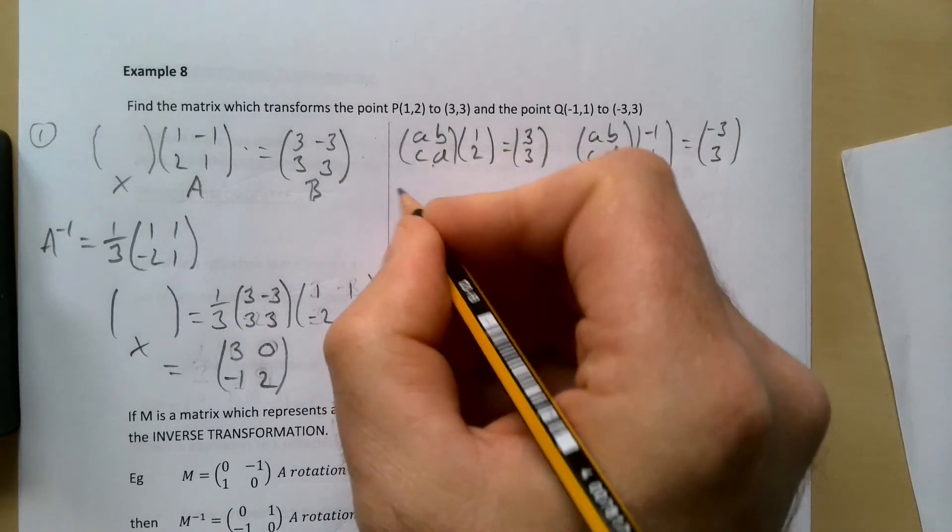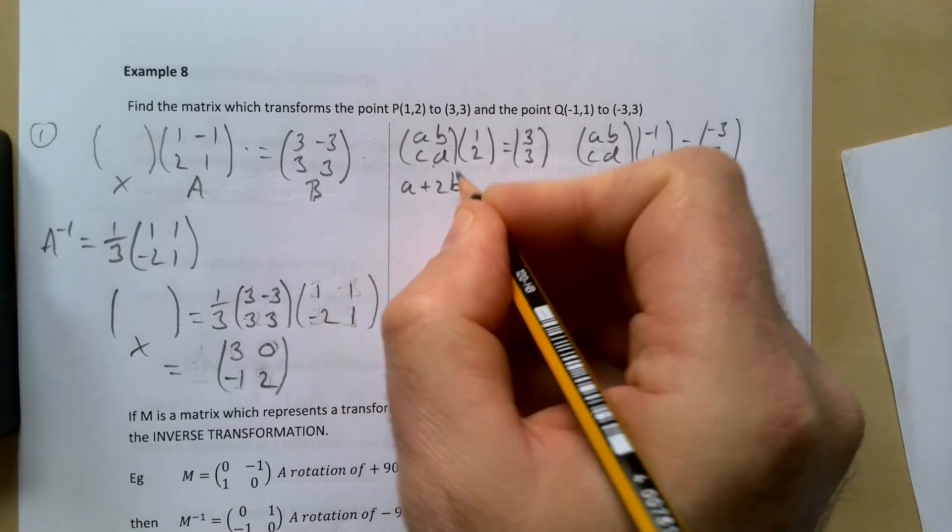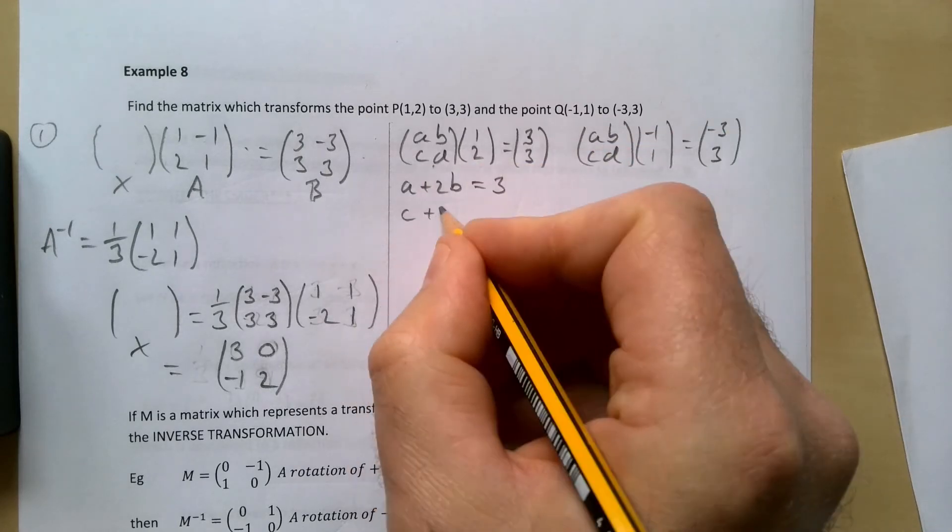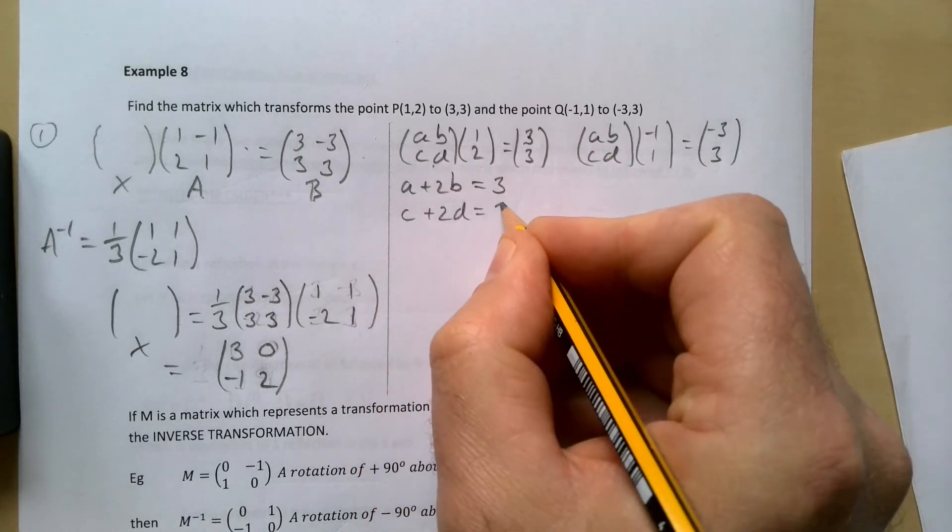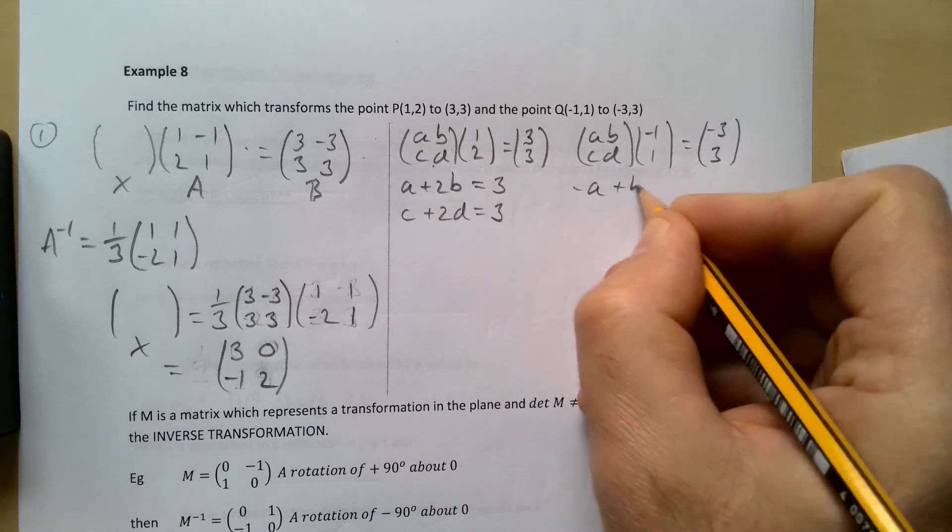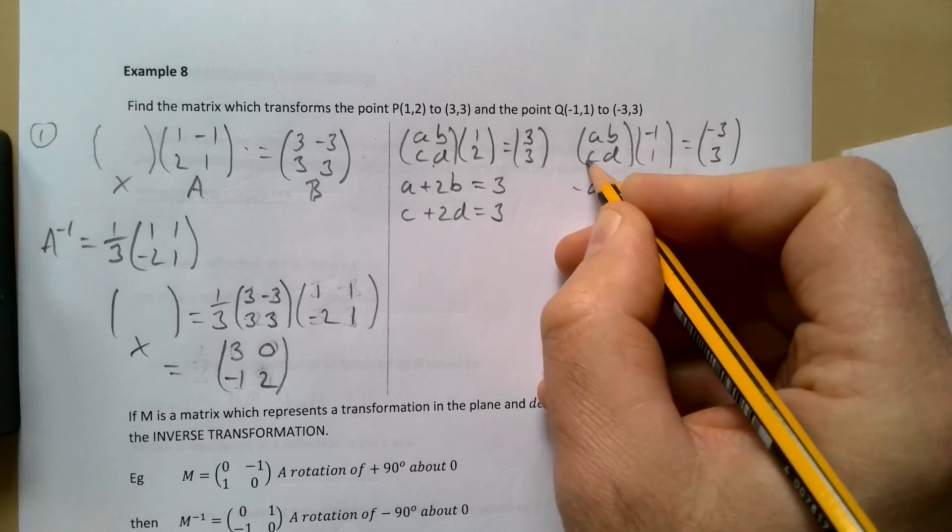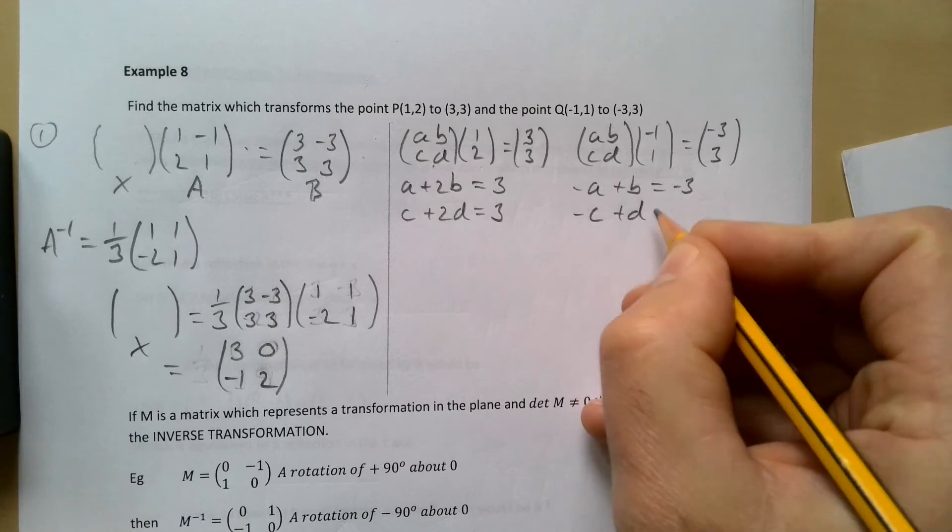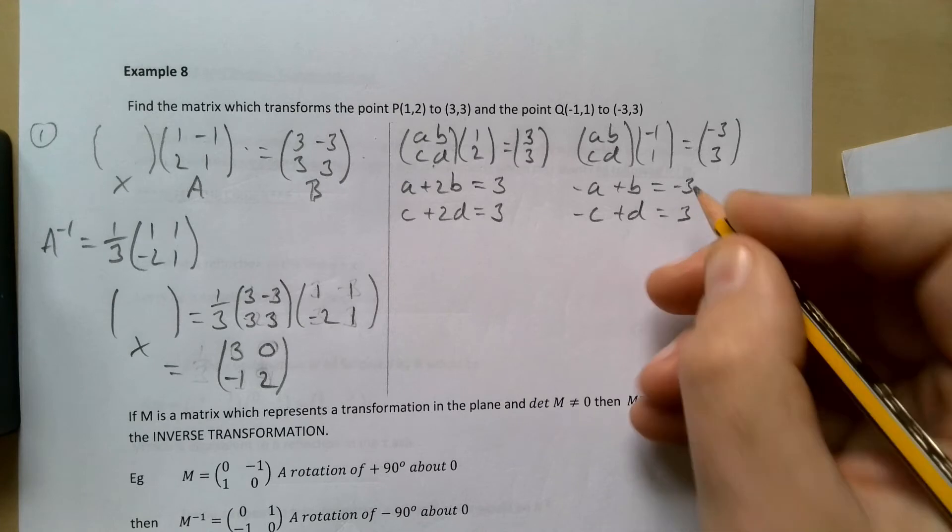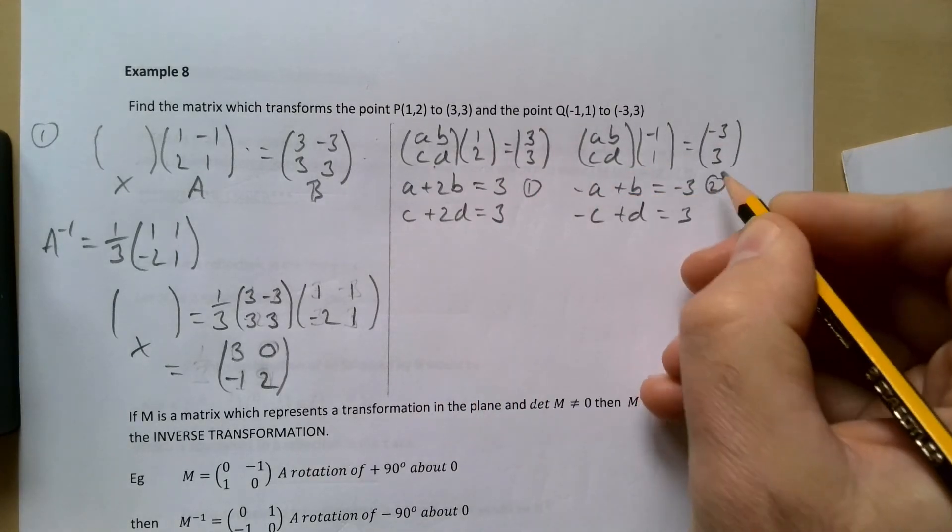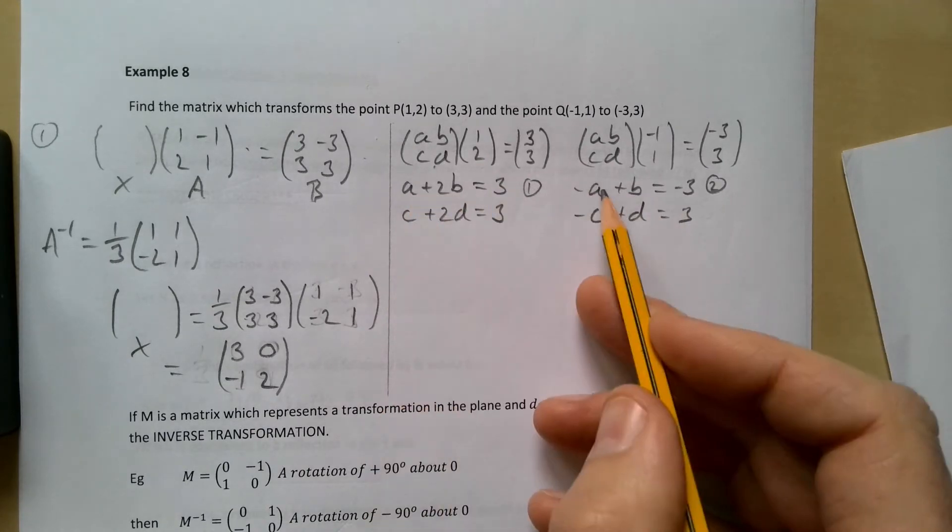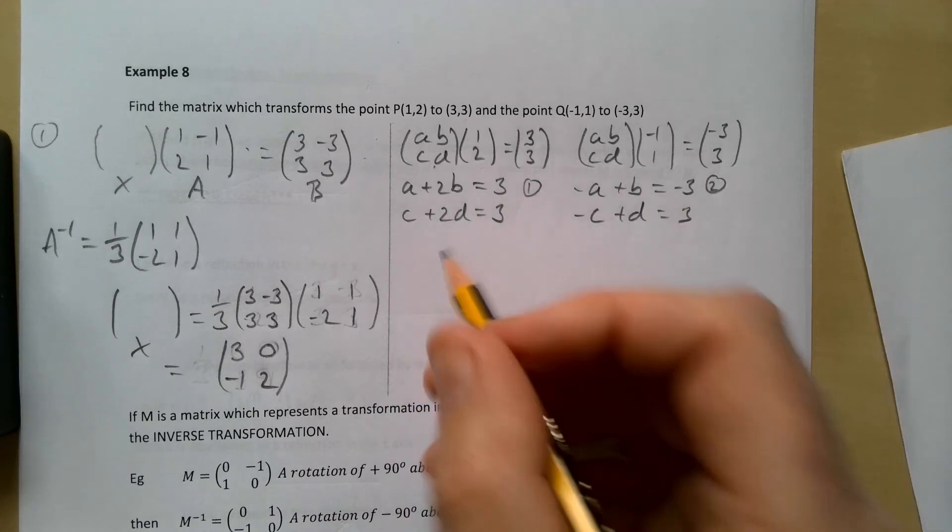So multiplying this out you will have a plus 2b equals 3 and then we have c plus 2d equals 3. Over here we have minus a plus b is minus 3 and multiplying this out minus c plus d is 3. If I call this equation 1 and equation 2, and if I add these two equations, a and minus a they cancel out and then 3b equals 0.